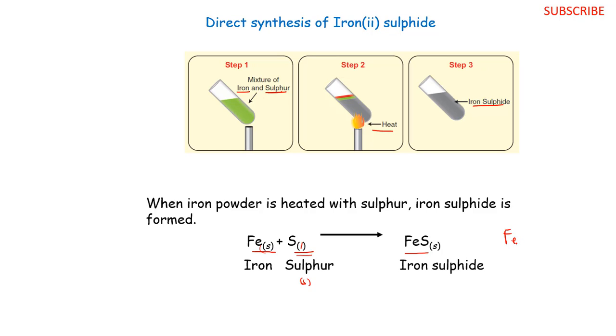And then we shall form iron(II) sulfide. Remember, valence of iron in this case is two, and the valence of sulfur in this case is two. So if you are to come up with the chemical formula of iron sulfide, it will just be FeS. So that is iron sulfide.